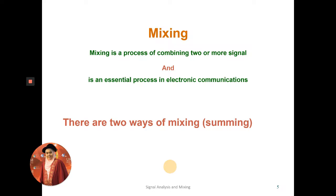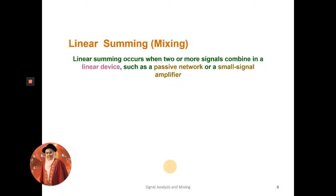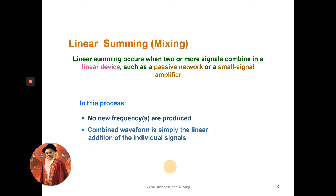The two mixing methods are linear mixing and non-linear mixing. Linear mixing uses a linear device, while non-linear mixing uses a non-linear device. In linear summing, the process uses linear devices such as passive networks or small-signal amplifiers. At the output, no new frequencies are produced — the same frequencies present at the input will appear at the output.